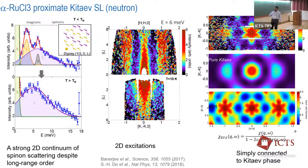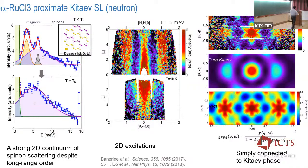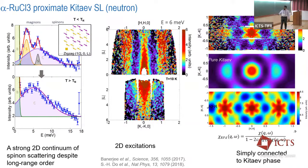We did neutron scattering, measuring intensity versus energy at temperatures below and above the Néel temperature. Below the Néel temperature, we see spin wave modes sitting on top of a continuum. Above the Néel temperature, you just have the continuum of scattering. Looking at L versus K, you see rod-like scattering spectra, meaning the continuum is mostly confined in each plane — so even in a 3D material, it's really all in-plane. Looking at the in-plane scattering, you can see a star-like pattern that starts to resemble the Kitaev calculation, and at low energies a simple RPA suggests you might be connected to the Kitaev phase.